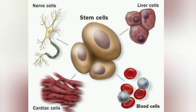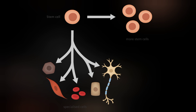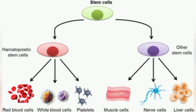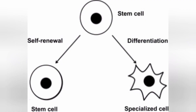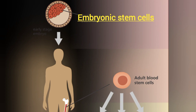Stem cells have unique properties: they can divide over and over again to produce new cells, and they have the potential to develop into many different types of cells in the body, so they can replace and restore damaged tissue. As they divide, they can change into other types of cells that make up the body. By utilizing these properties, embryonic stem cells and adult stem cells are used as primary instruments in the procedure of tissue engineering.